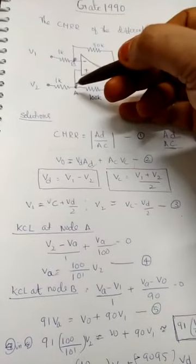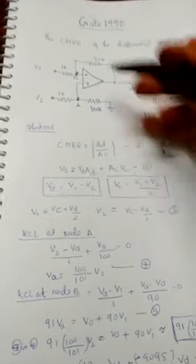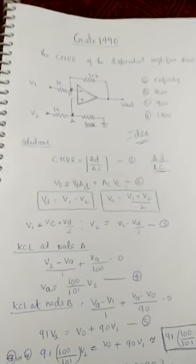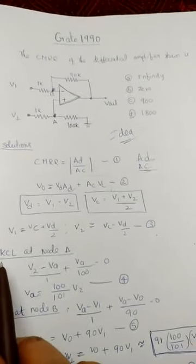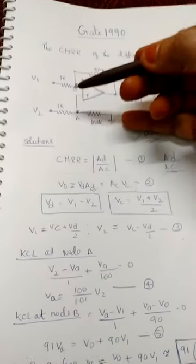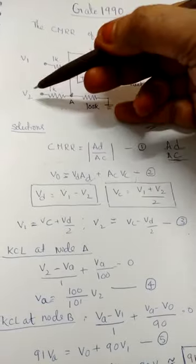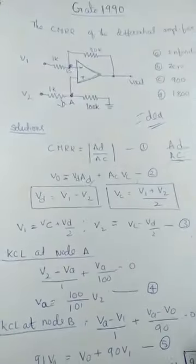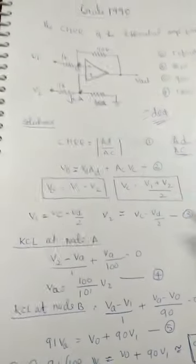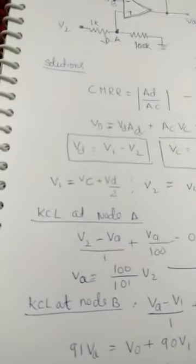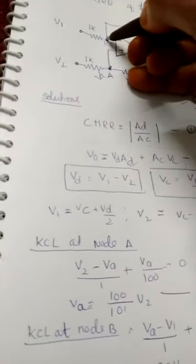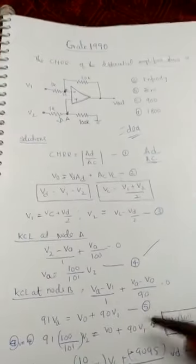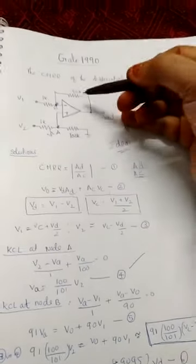Now apply KCL at node A and node B to get the common mode rejection ratio, calculating it in terms of AD and AC. For KCL at node A: the equation is (V2 minus VA)/1 plus VA/100 equals 0. From this, VA equals (101/100)×V2. For node B, the KCL equation considers V1: (VA minus V1)/1 plus (VA minus V0)/90.